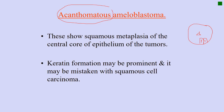In acanthomatous ameloblastoma, the histological pattern is very similar to follicular ameloblastoma — you have the same typical arrangement — but the center, where stellate reticulum-like cells would be in follicular, is replaced by squamous cells. These show squamous metaplasia of the central core of the epithelium. Keratin may be prominent, and it may be mistaken for squamous cell carcinoma.